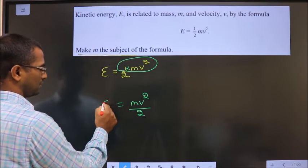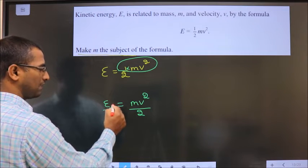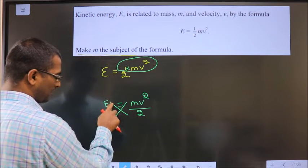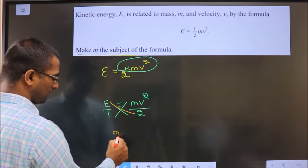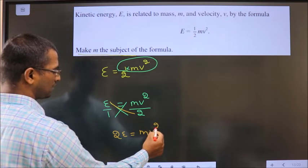So now it is a fraction equal to, so by 1, do cross multiplication. E times 2, so that will be 2E equal to Mv squared.